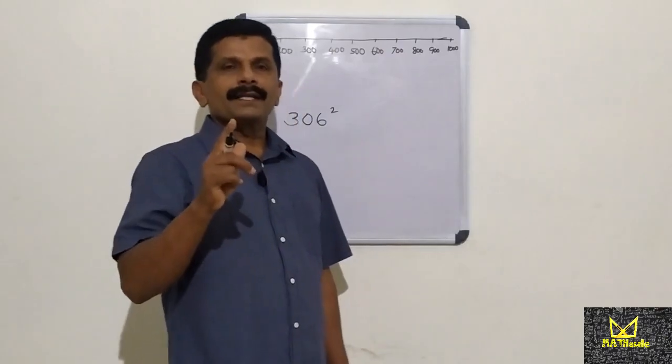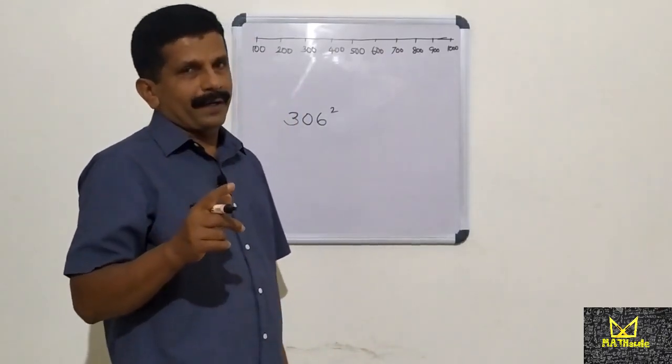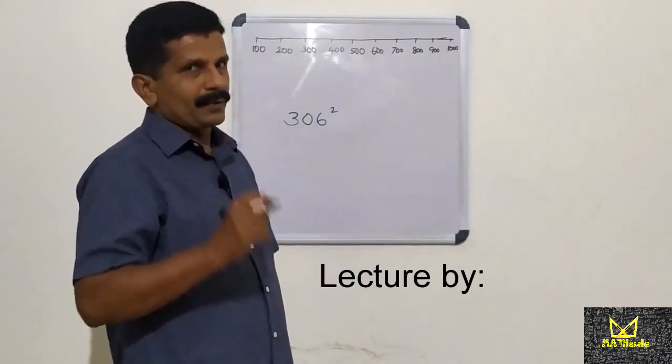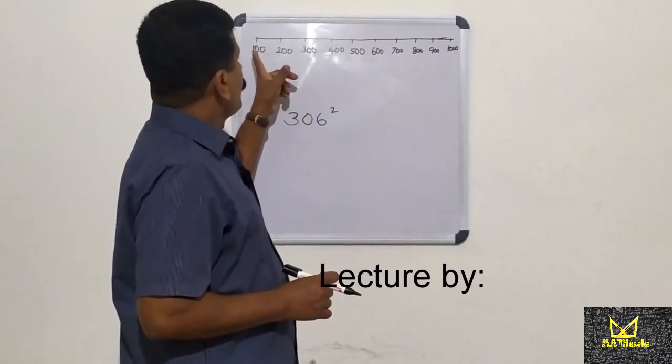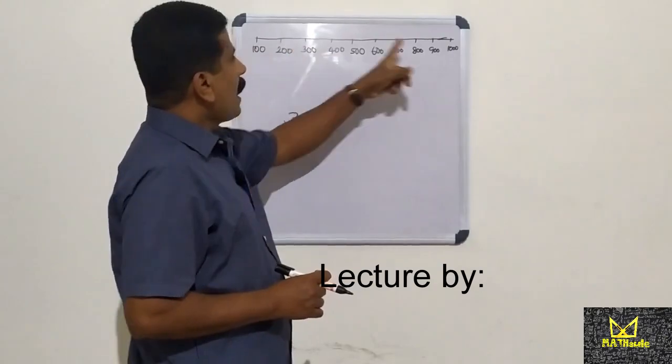Let's take a look at the square of 36. In this board, there are 100 and 100.